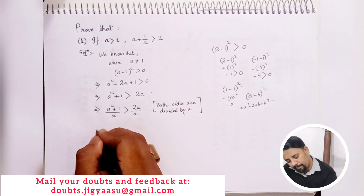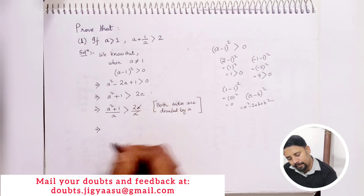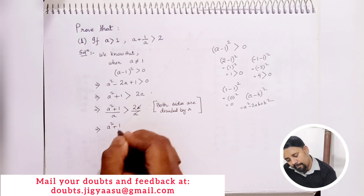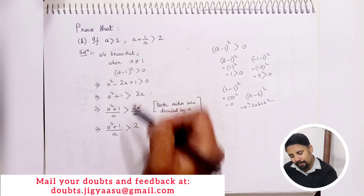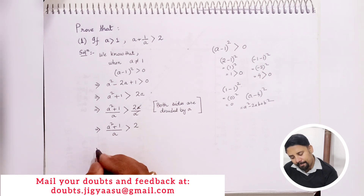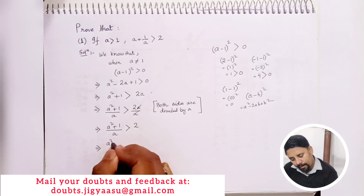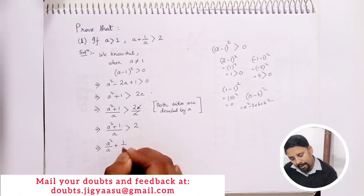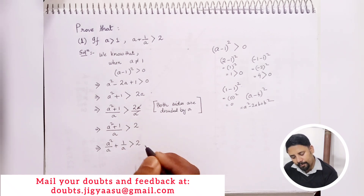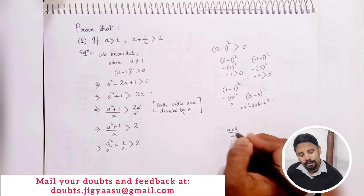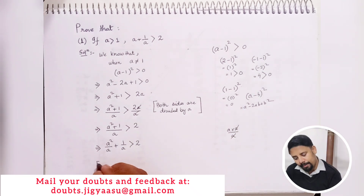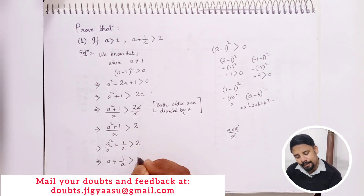We can cancel out a on the right-hand side, leaving a² plus 1 by a is greater than 2. We can split the left-hand side: a² by a plus 1 by a is greater than 2. Since a² by a simplifies to a, we are left with a plus 1 by a is greater than 2. This is what we were required to prove.